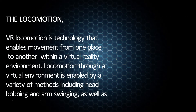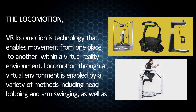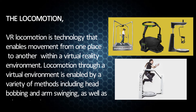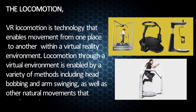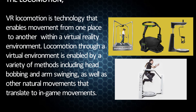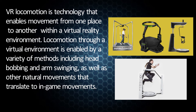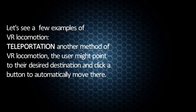VR locomotion is technology that enables movement from one place to another within a virtual reality environment. Locomotion through a virtual environment is enabled by a variety of methods including head bobbing and arm swinging, as well as other natural movements that translate to in-game movements. Let's see a few examples of VR locomotion.